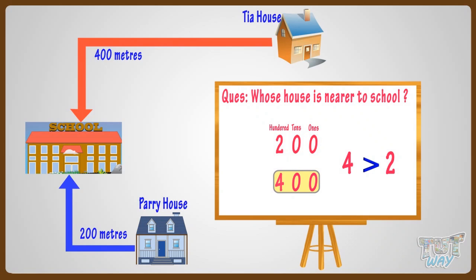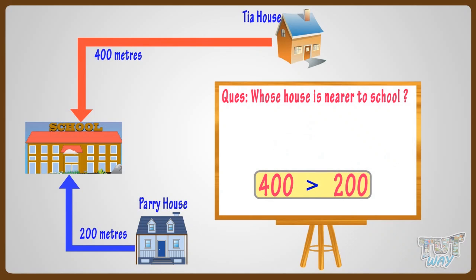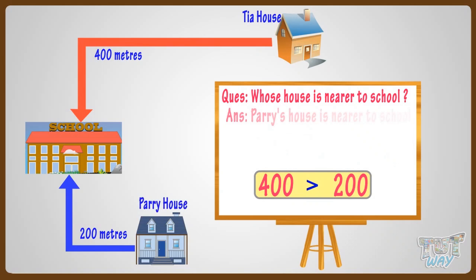We represent it like this. So Perry's house is nearer to school than Tia's house.